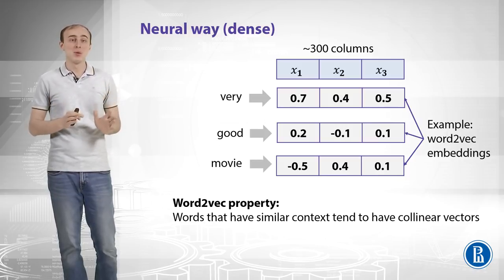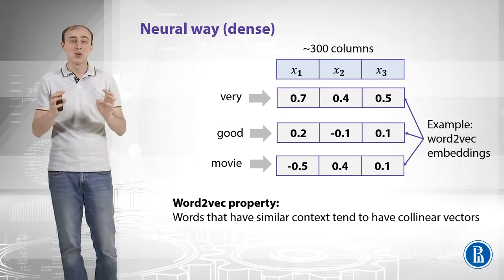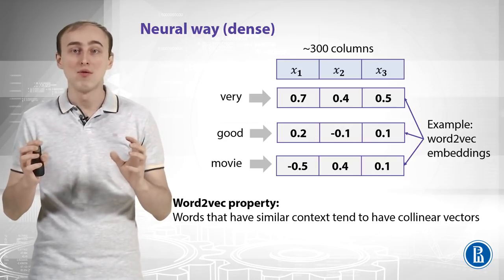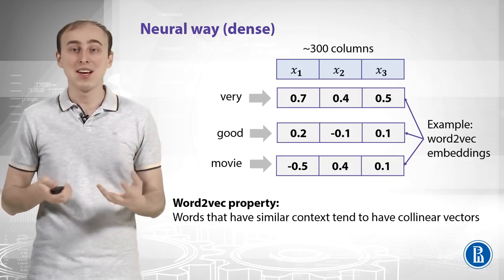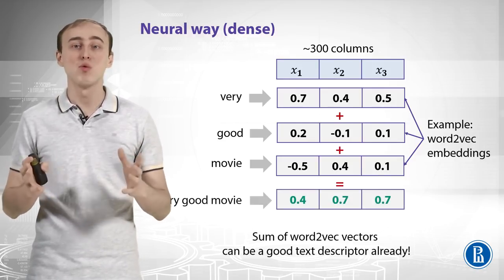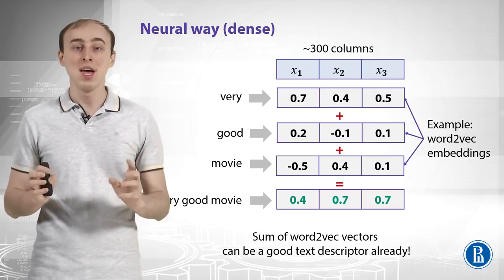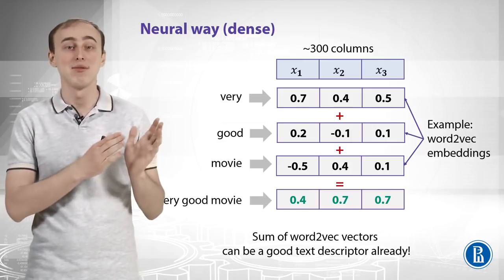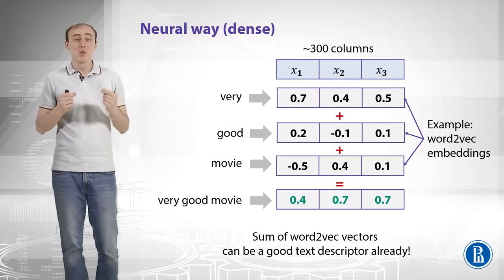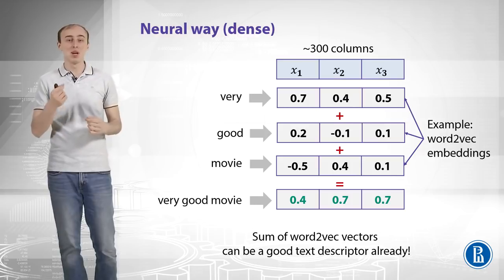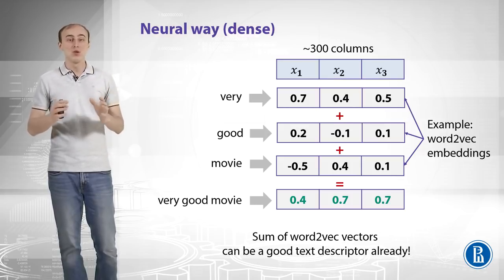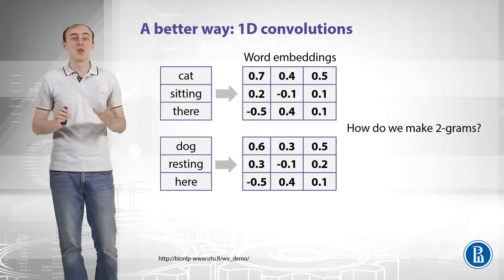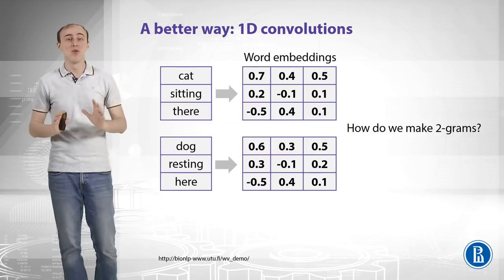Now we can replace each word with a dense vector of 300 real values. How can we come up with a feature descriptor for the whole text? We can use the same approach as bag of words — just take the sum of those vectors. We get a representation based on word2vec embeddings for the whole text, like 'very good movie'. That sum of word2vec vectors actually works in practice and can give you a great baseline descriptor for your classifier.